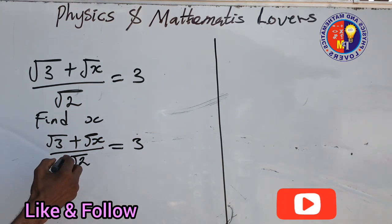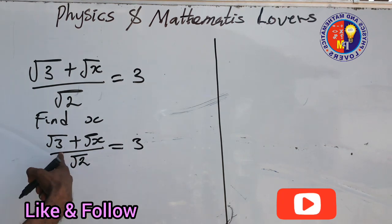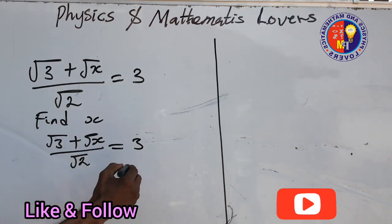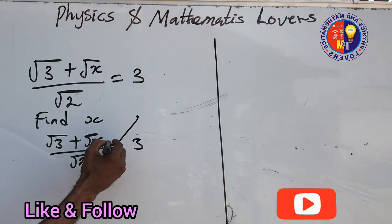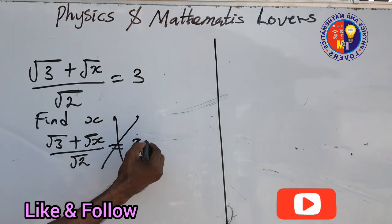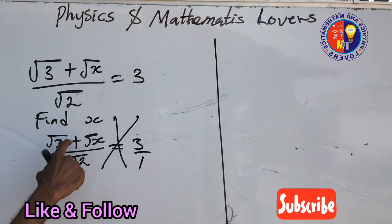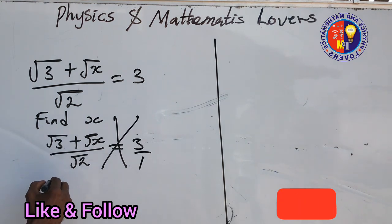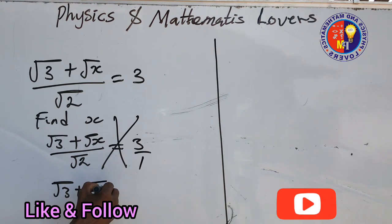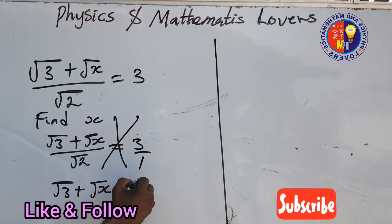In this case, we want to remove the fraction to make it a linear equation. So we just have to cross-multiply. This one will multiply this, and this one will multiply this — it's all over 1. So we get root 3 plus root x, equal to 3 root 2.